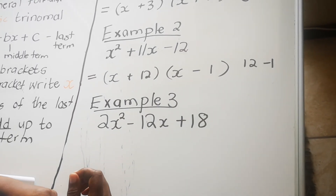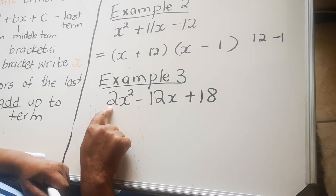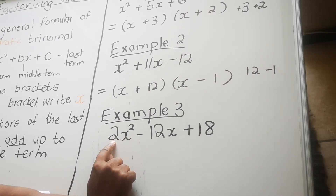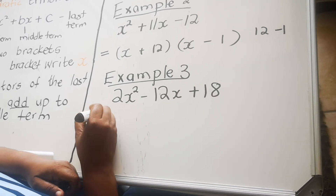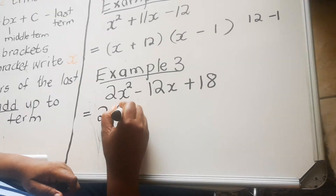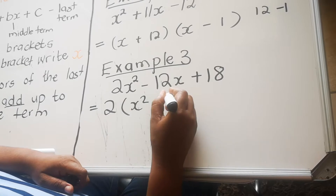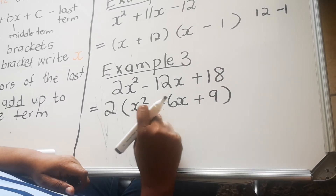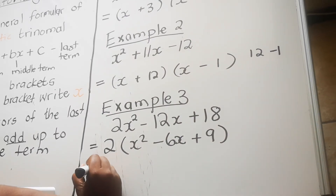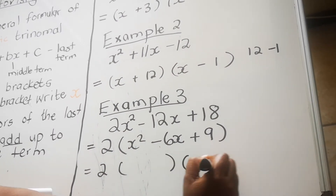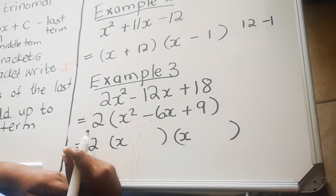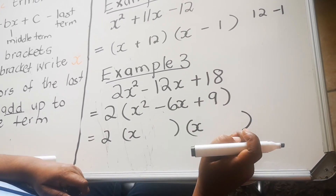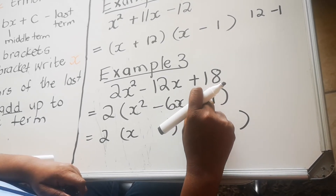Example three is slightly different from the others because the first term has a coefficient of 2. When you see that, you check whether there is a common factor of 2 in each term. In this case there is, so you take out the common factor: 2(2x² − 6x + 9) becomes 2 times the bracket. Now look inside the bracket — it's similar to what we've been doing, so follow the same steps: open two brackets, put x in each bracket, then find factors.